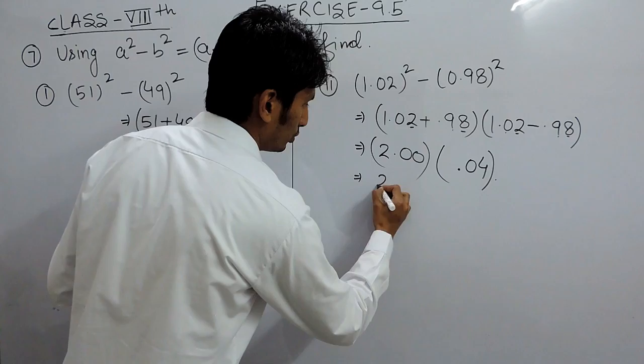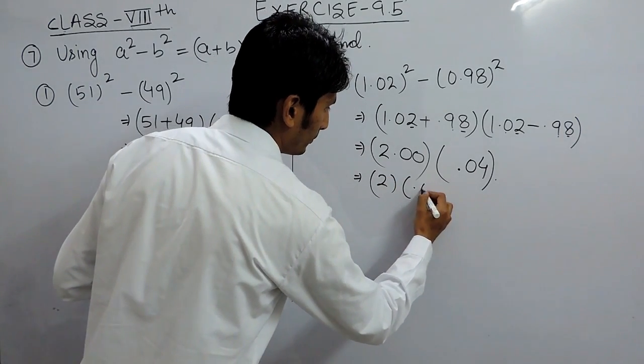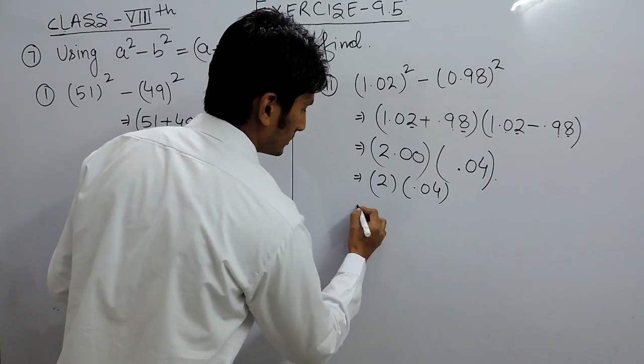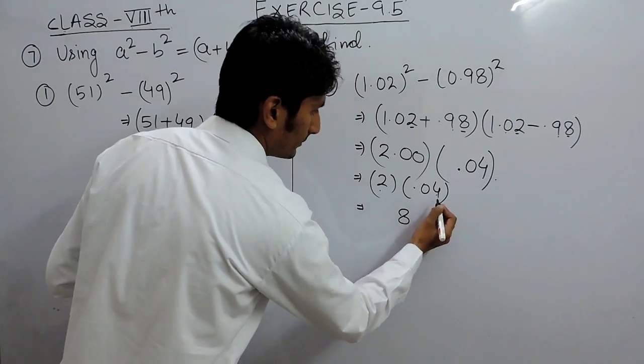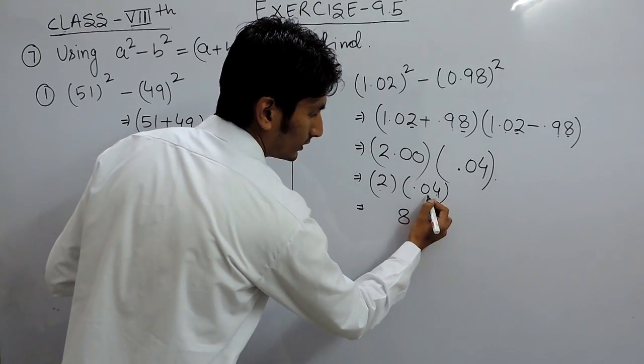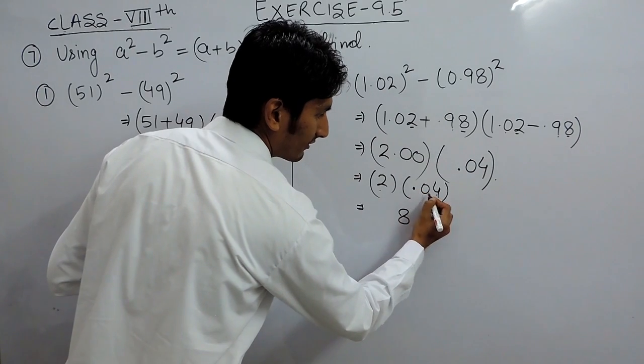This is 2 multiplied with 0.04. So, this is 4 into 2 is 8, but there are 2 decimals, 2 digits after the decimal.